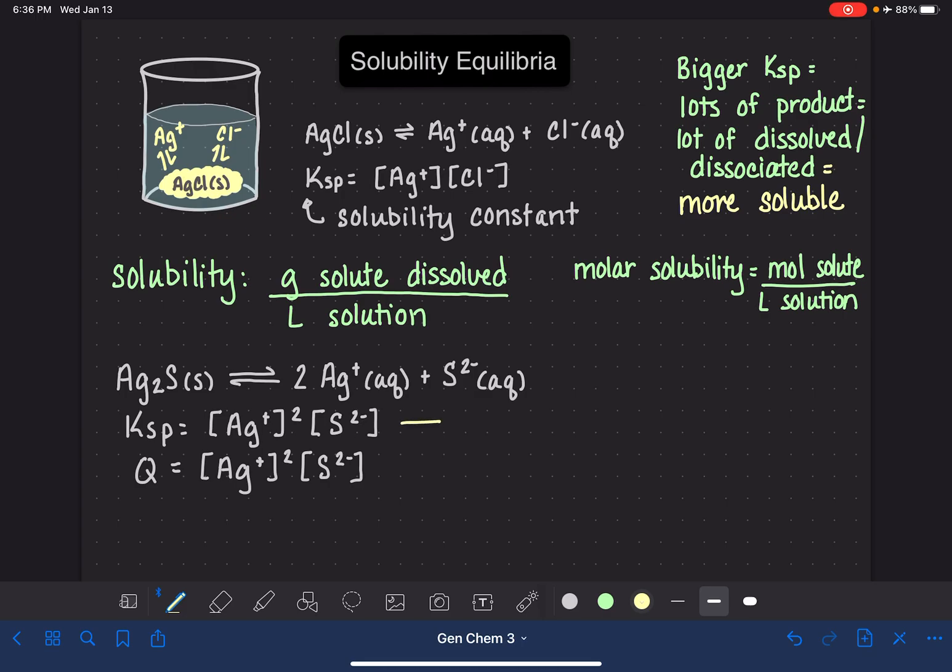The difference between K and Q is that we use the term K when we know that the system is in equilibrium. And we use the term Q when we're not sure if it's in equilibrium. It might be, it might not be.